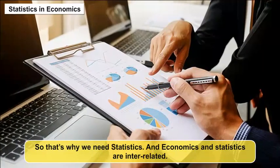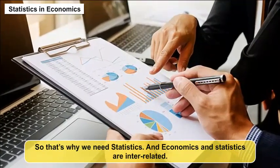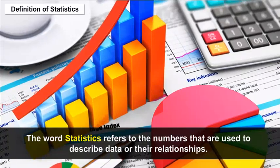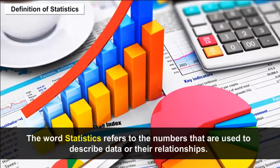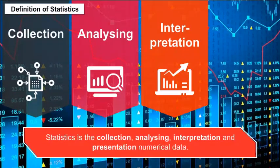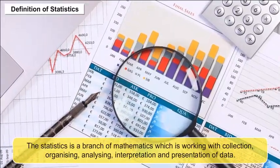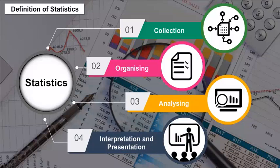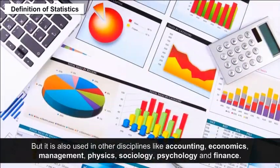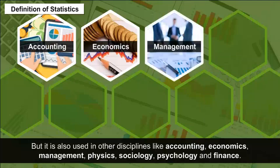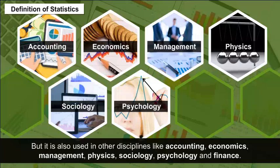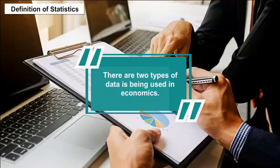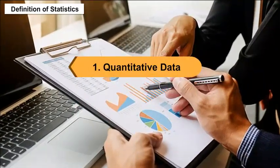Economics and statistics are interrelated. The word statistics refers to the numbers used to describe data or their relationships. Statistics is the collection, analyzing, interpretation, and presentation of numerical data. It is a branch of mathematics but is also used in other disciplines like accounting, economics, management, physics, sociology, psychology, and finance. There are two types of data used in economics: one, quantitative; and two, qualitative.